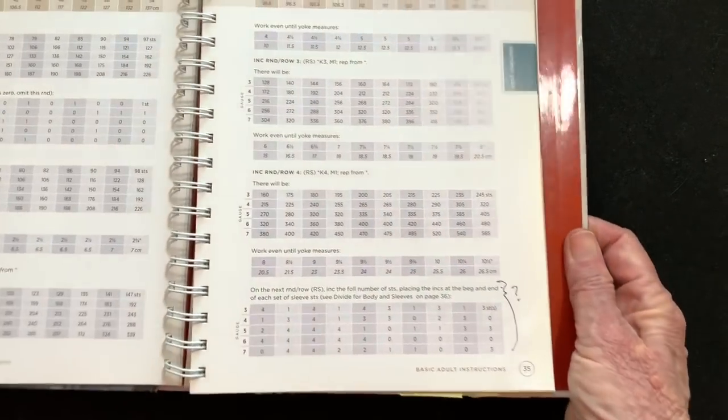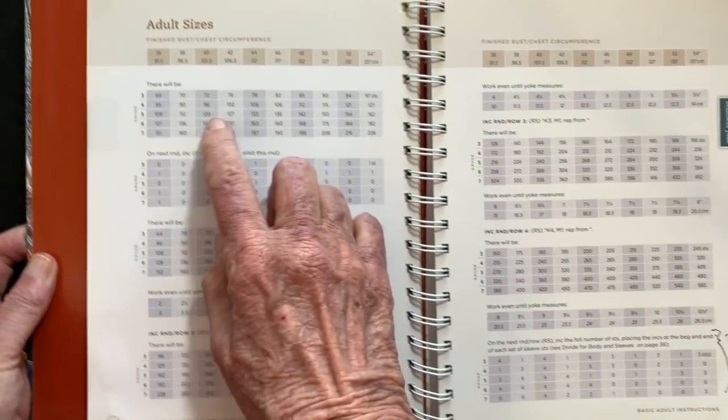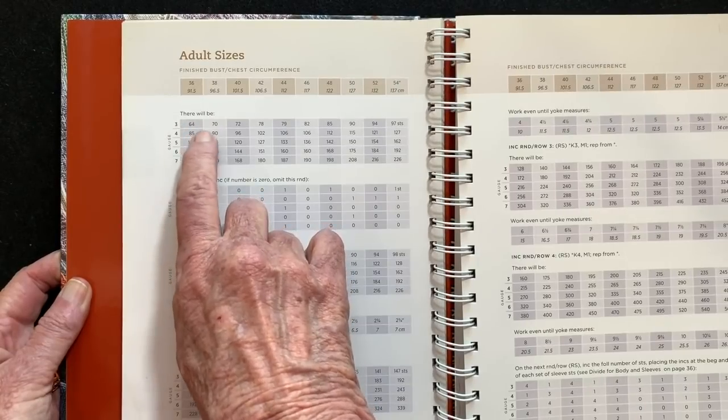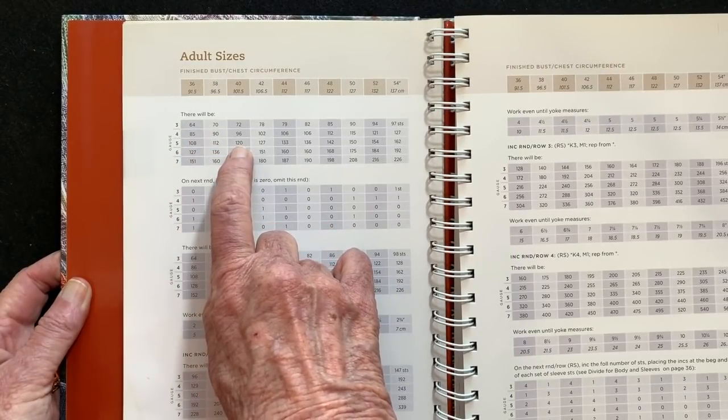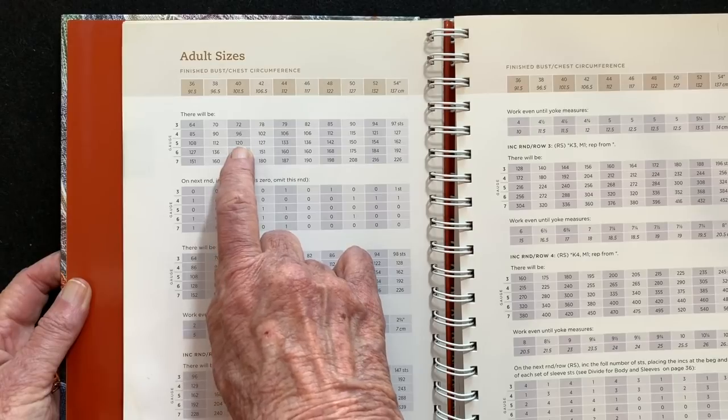It's right after you cast on and she says after you do the first increase round there will be 120 stitches. You want to make sure you have 123.